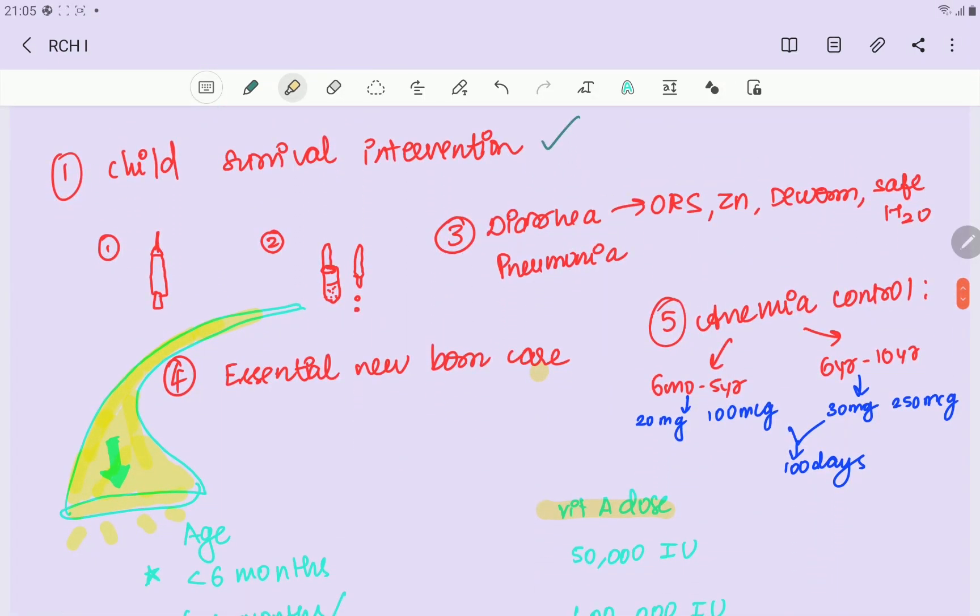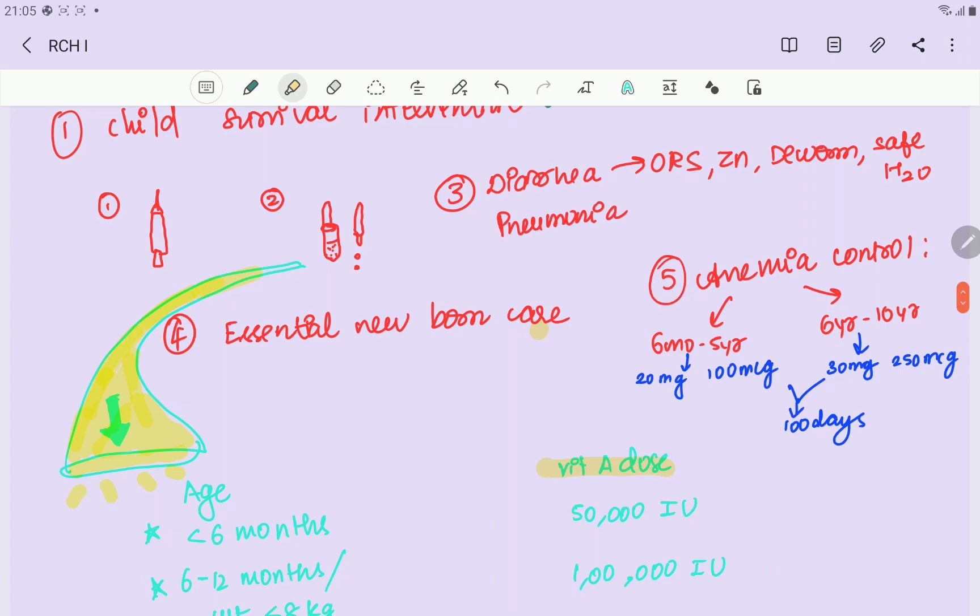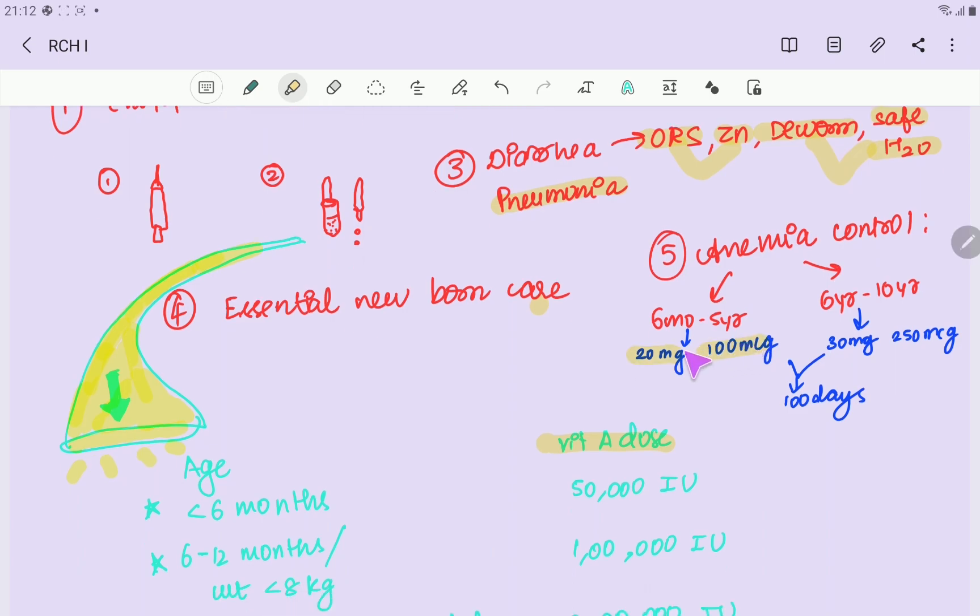For anemia control, the dosage is 20mg iron and 100mcg folic acid. 6 months to 5 years gets 20mg iron and 100mcg folic acid. For 6 years to 10 years, we have to give 30mg iron and 250mcg folic acid for 100 days.